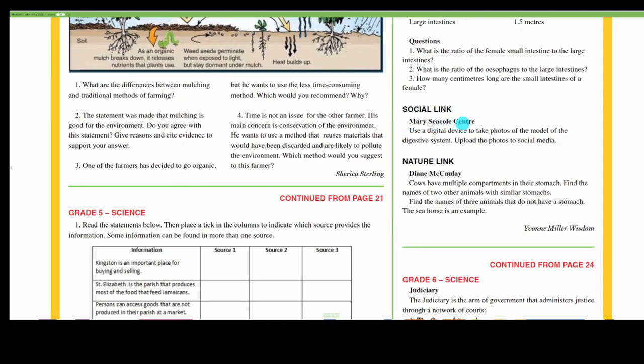Social link, the Marisql Center: Use a digital device to take photos of the model of the digestive system and upload photos to social media. Nature link, the Dan McCauley Center: Cows have multiple compartments in their stomach. Find the name of two other animals with similar stomachs. Find the names of three animals that do not have a stomach. The seahorse is an example.